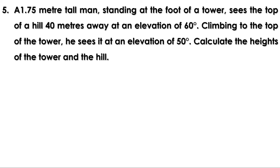In this problem there is a hill and there is a tower. The distance between them is 40 meters. There is a man whose height is 1.75 meters. He stands at the foot of the tower and sees the top of the hill at an elevation of 60 degrees. After that he climbs to the top of the tower and from there sees the top of the hill at an elevation of 50 degrees. We have to find the heights of the tower and the hill. Let us draw the figure.